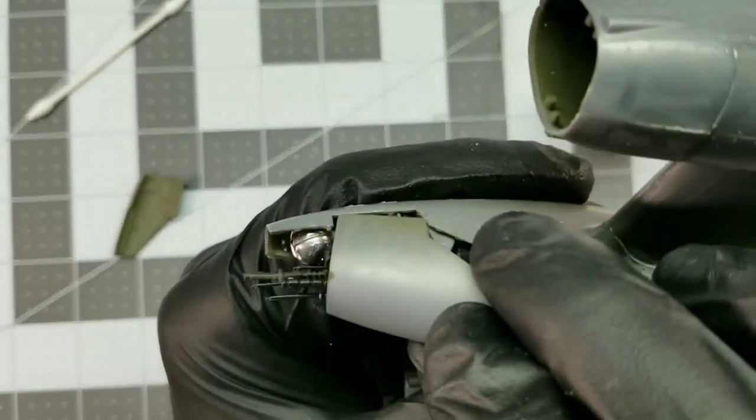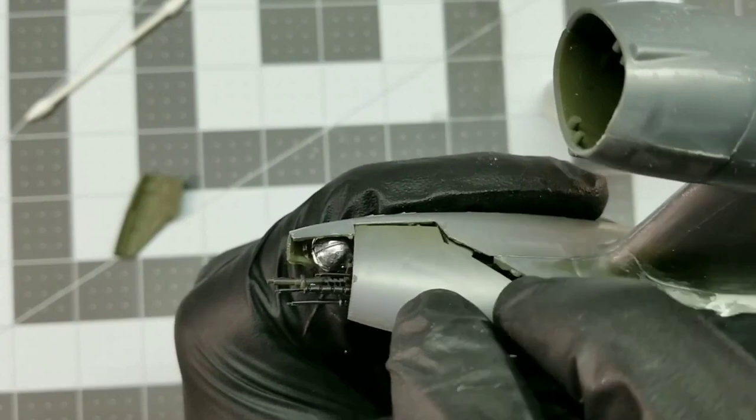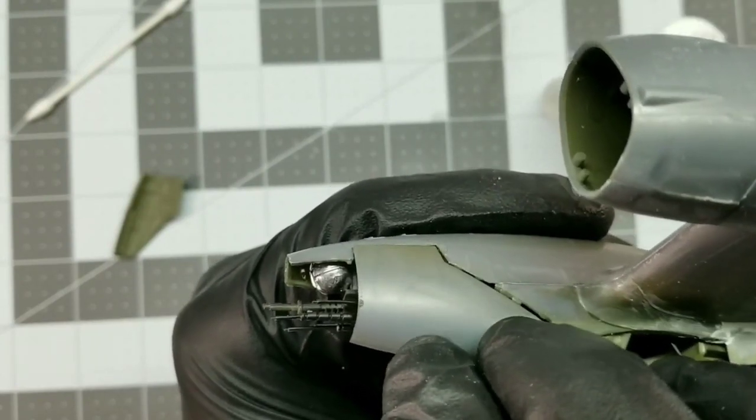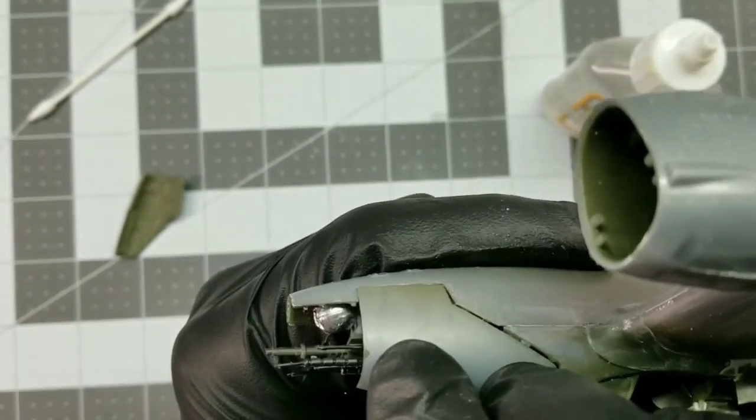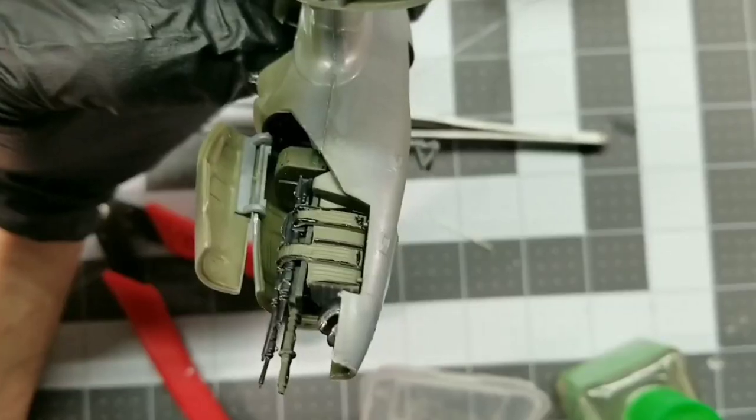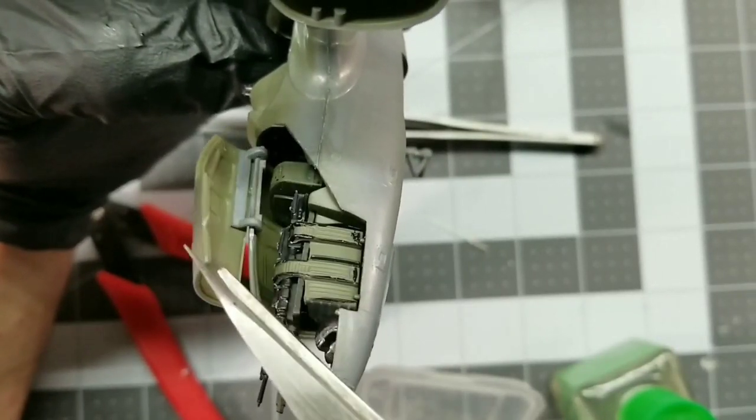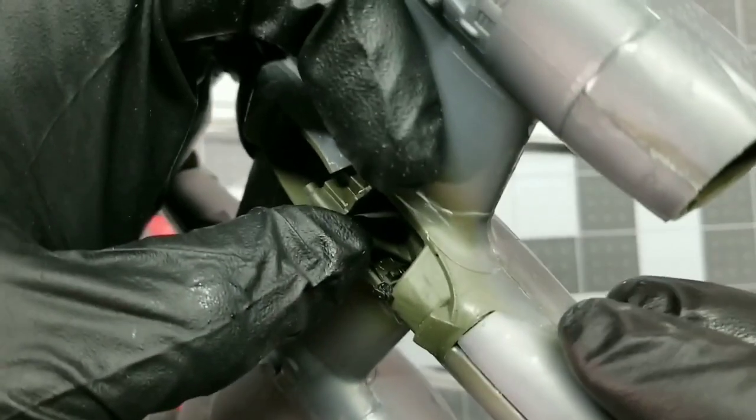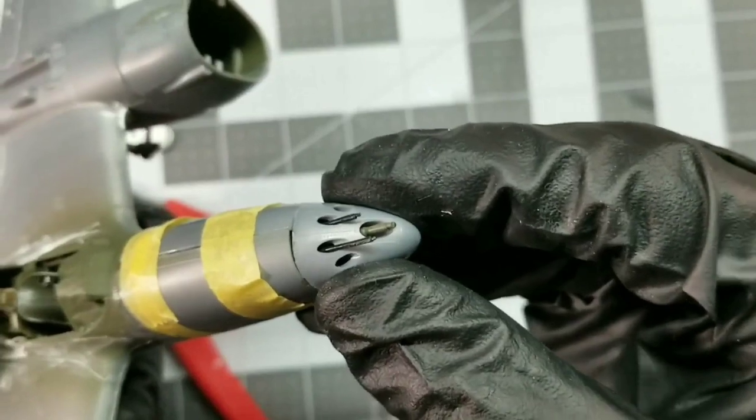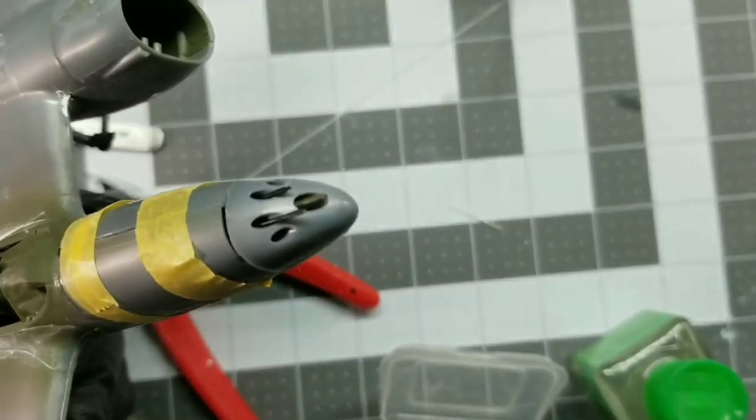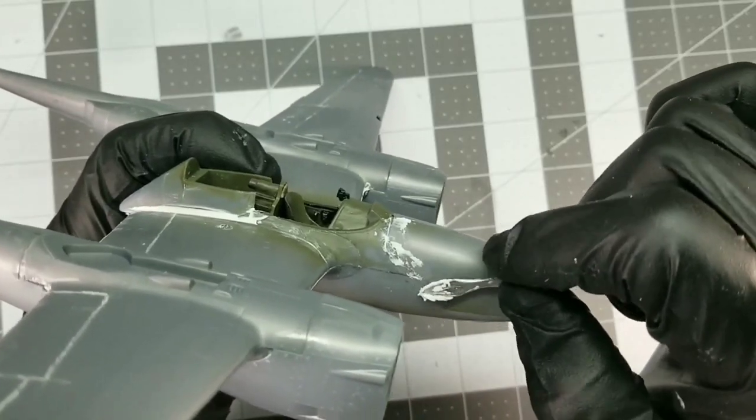I think what I'll do is use, I think what would be better would be RC weights and just load it up. So there you can see that hatch moves up and down. I think that's such a cool feature. Pop the nose cone on and there you go. Got another P38.